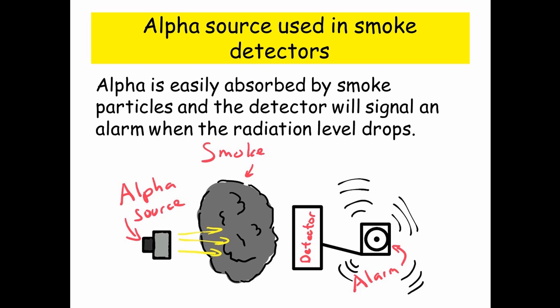But as soon as smoke gets in the way, the alpha is blocked, and therefore the detector suddenly realizes it can't detect the alpha source anymore — therefore there must be smoke in the way, and the alarm gets triggered.